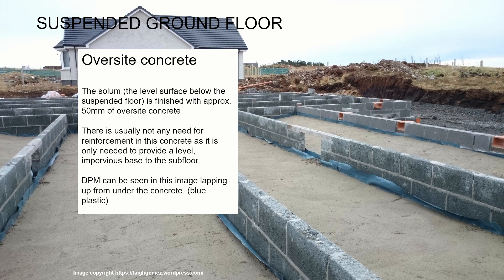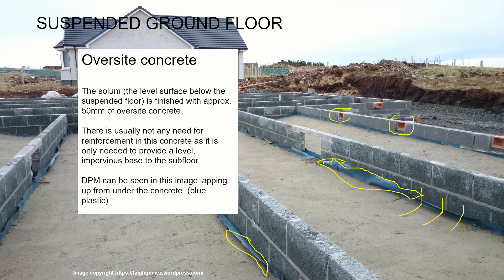The oversight concrete doesn't need to be reinforced — it's just 50mm of concrete, about 2 inches. We're not going to be standing on it or putting any weight or partitions onto it, so it's just there to tidy off the subfloor and prevent anything growing through. In this image we can see the blue DPM running around the edges — it's been laid over the sand before the concrete, lapped up the edges of the walls, and the concrete poured into it. The air bricks are visible to the outside to provide cross-flow of air.